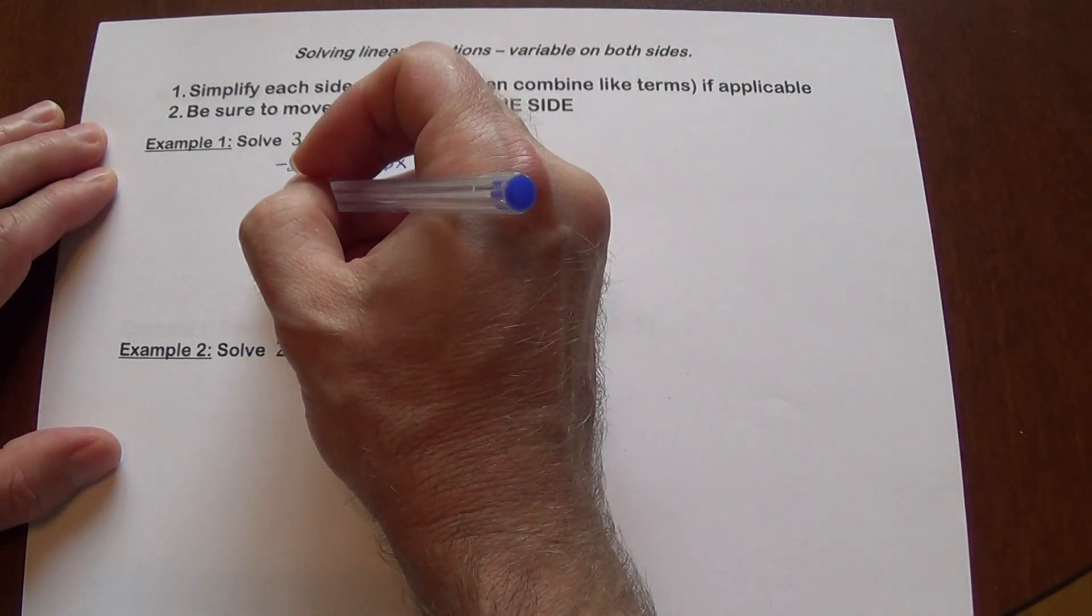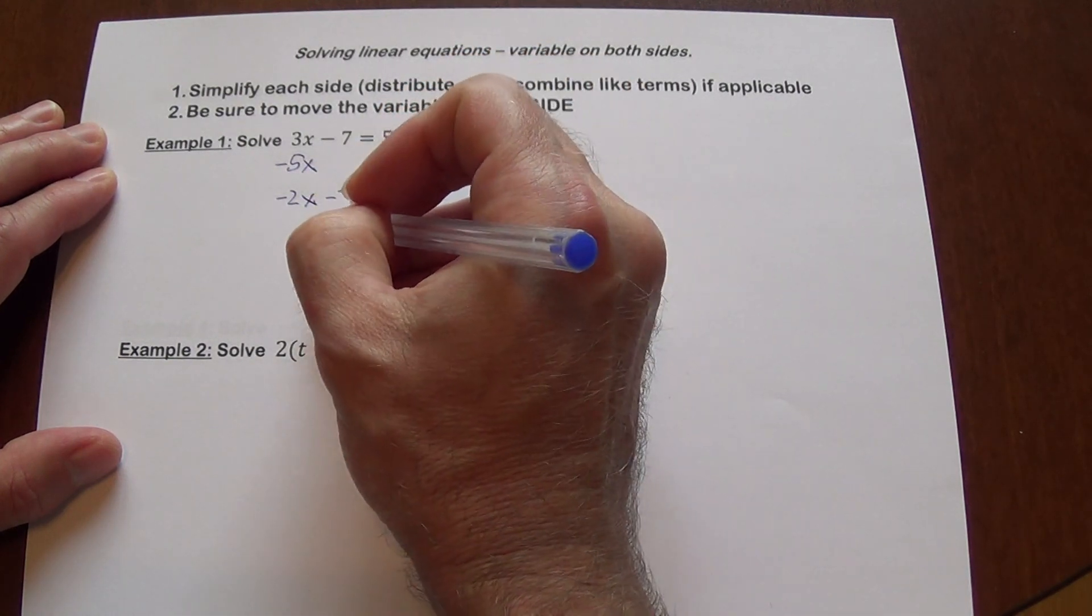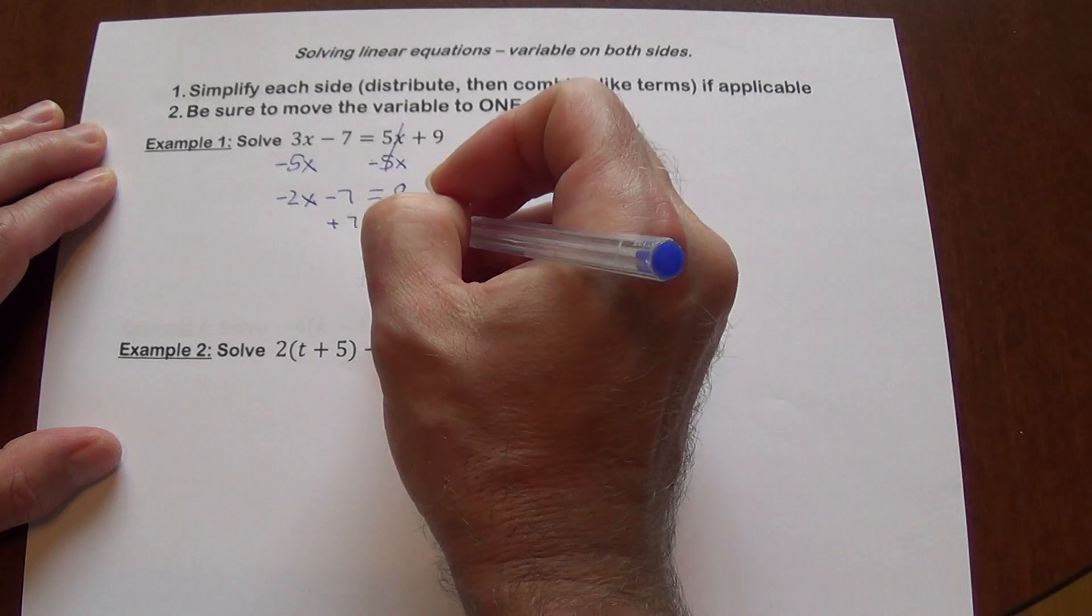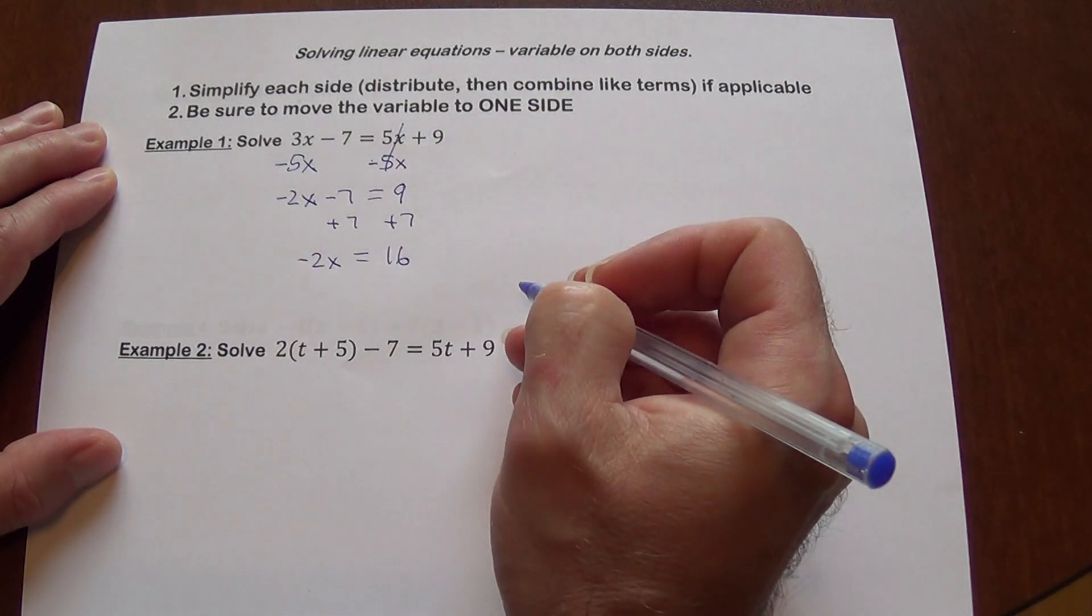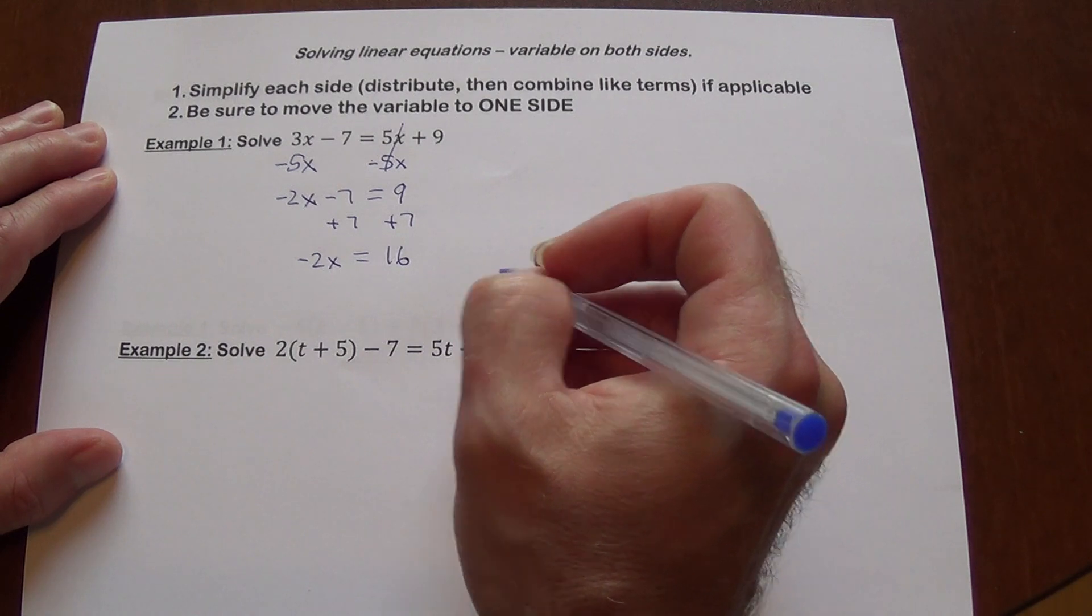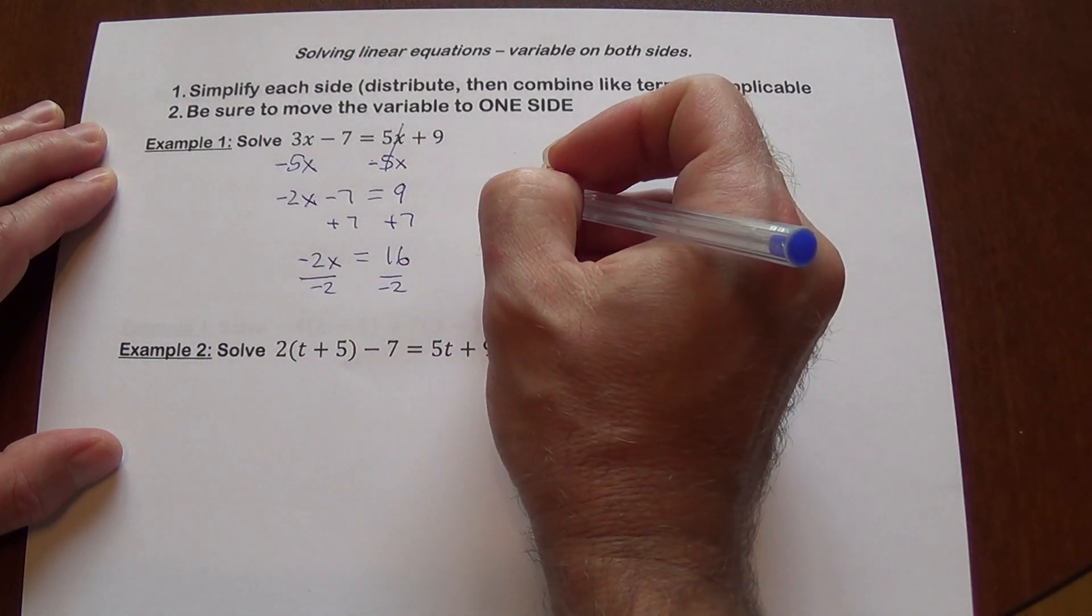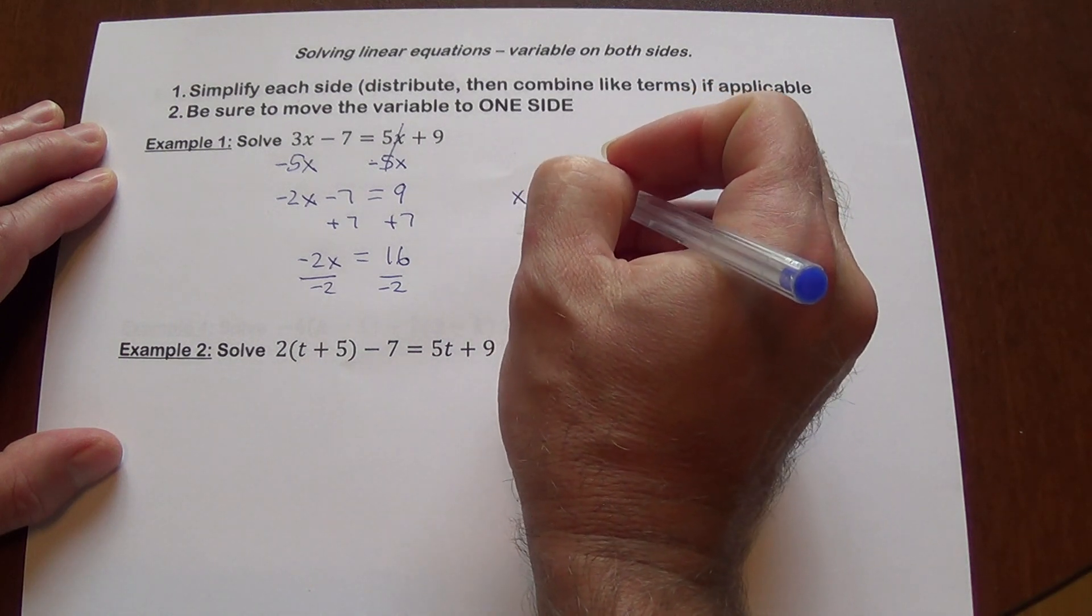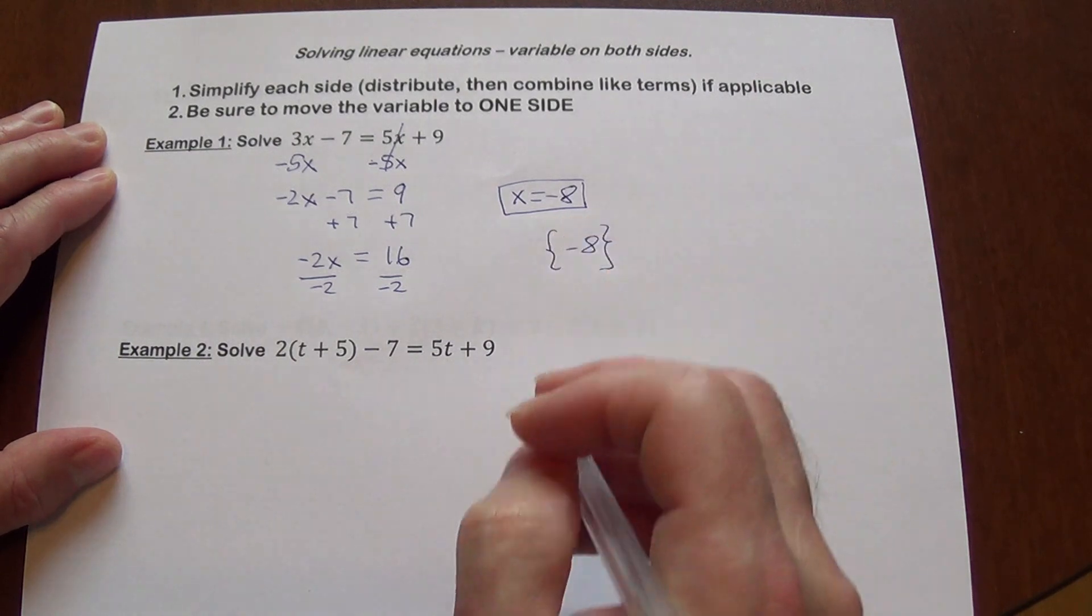It's going to cancel. I'm going to have negative 2x minus 7 equals 9, add 7, add 7, negative 2x equals 16. And then both sides will need to be divided by negative 2. And now you are going to have x equals negative 8. Or sometimes we write the answer like that. Depends on the format.